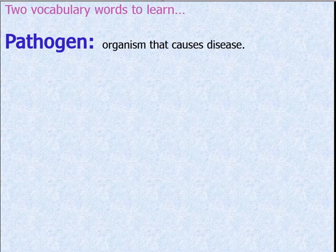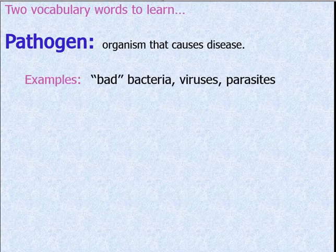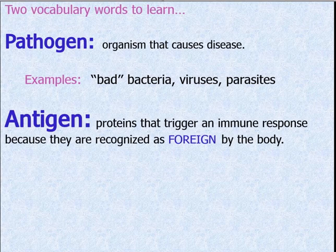There are two vocabulary words we need to learn and differentiate from one another. The first word is pathogen. A pathogen is any organism that causes disease and includes things like bad bacteria. Your gut is full of good bacteria, and some bacteria just takes up space, but only bad bacteria are considered pathogens — along with viruses and parasites.